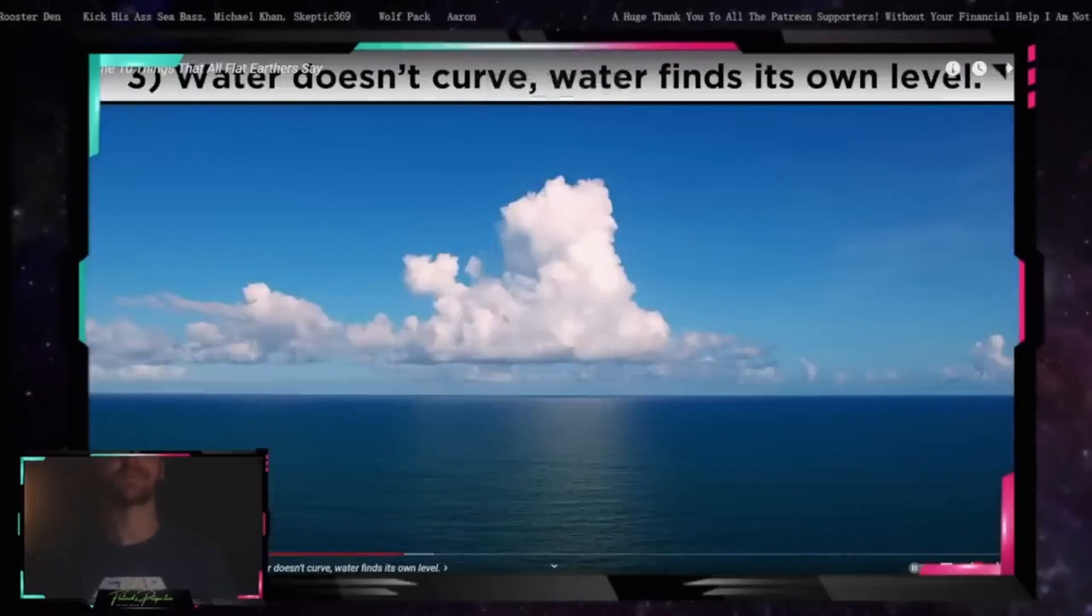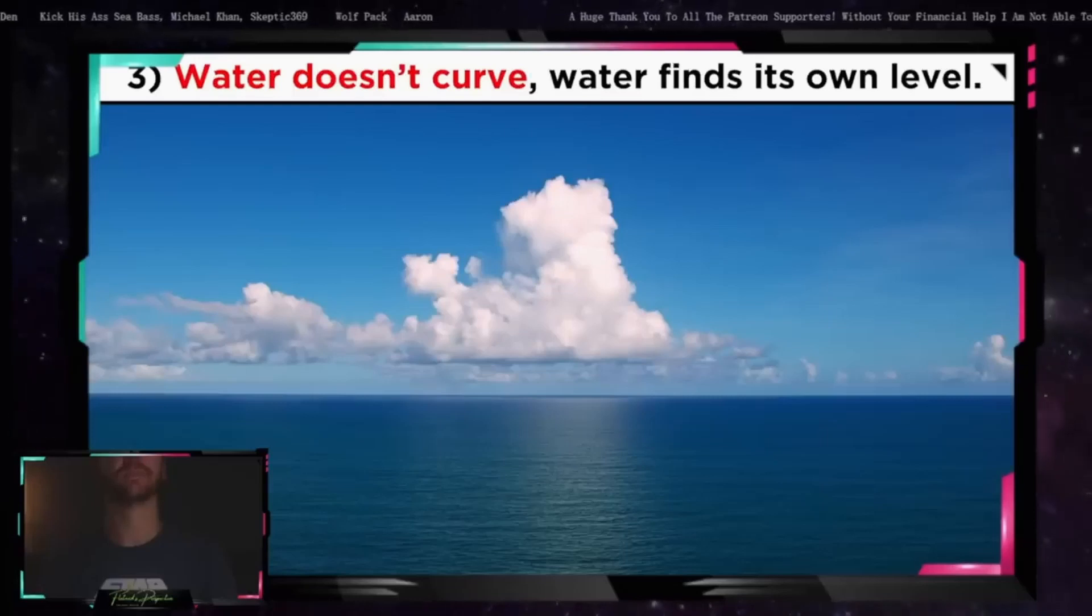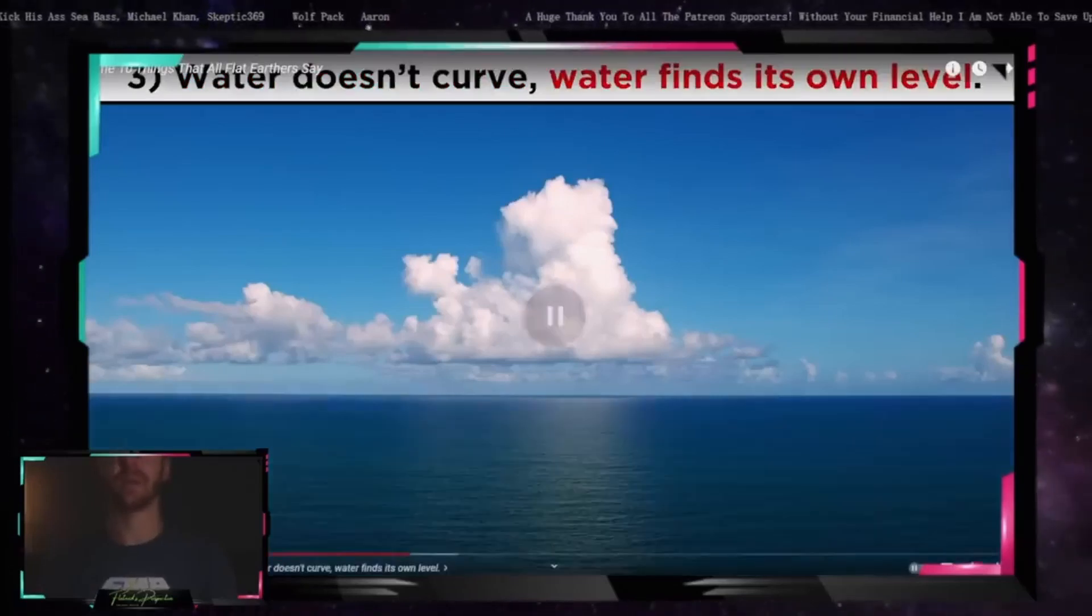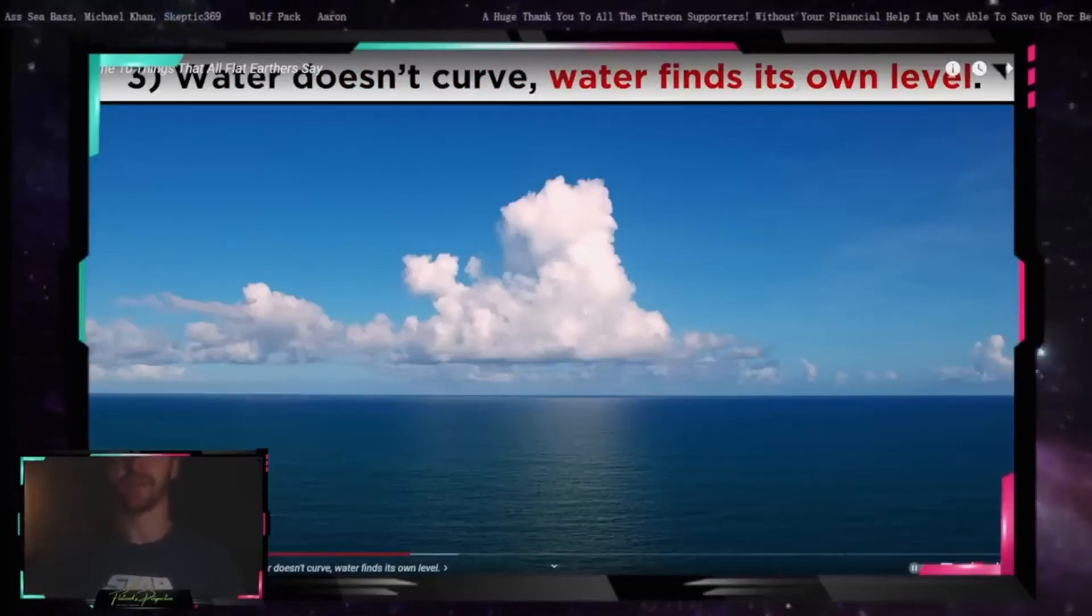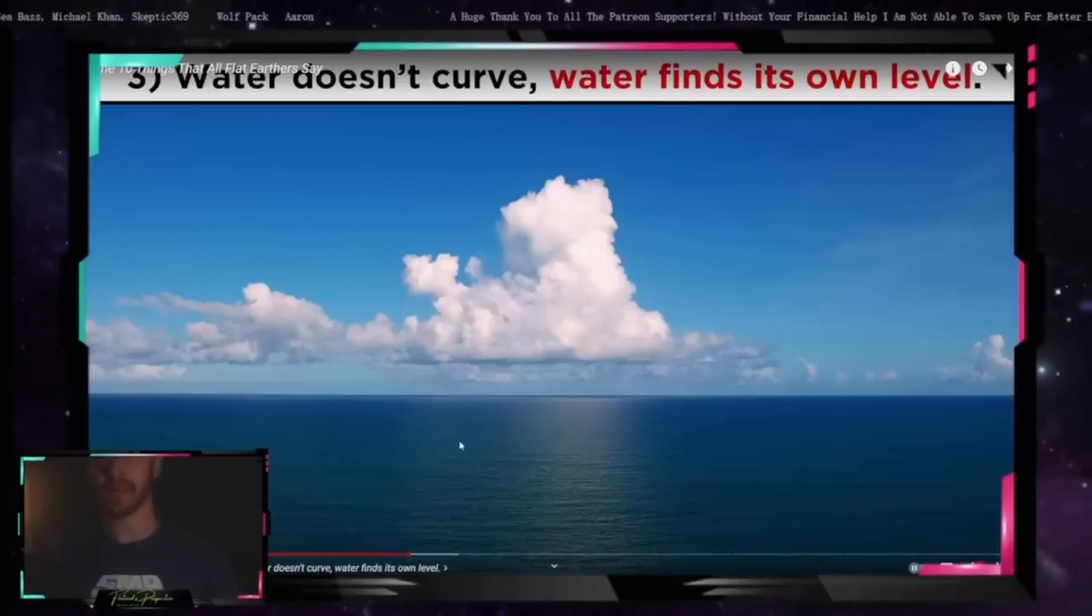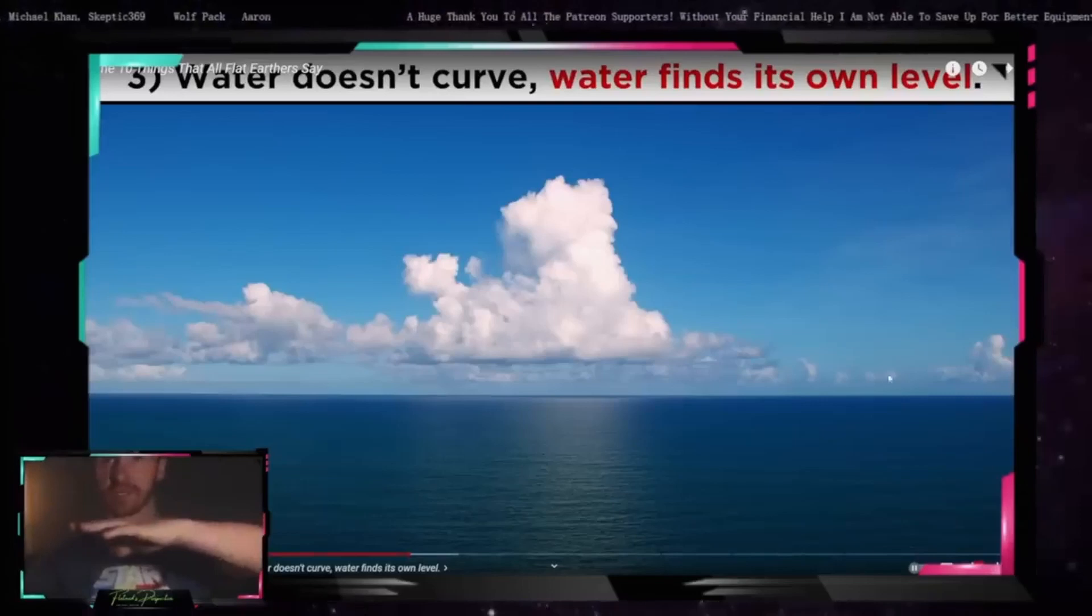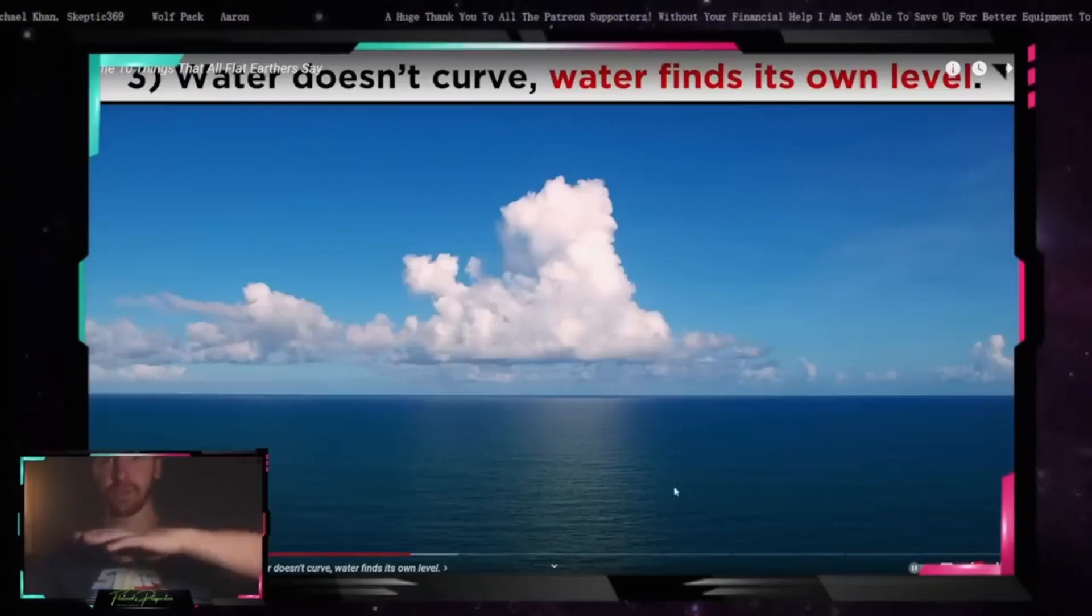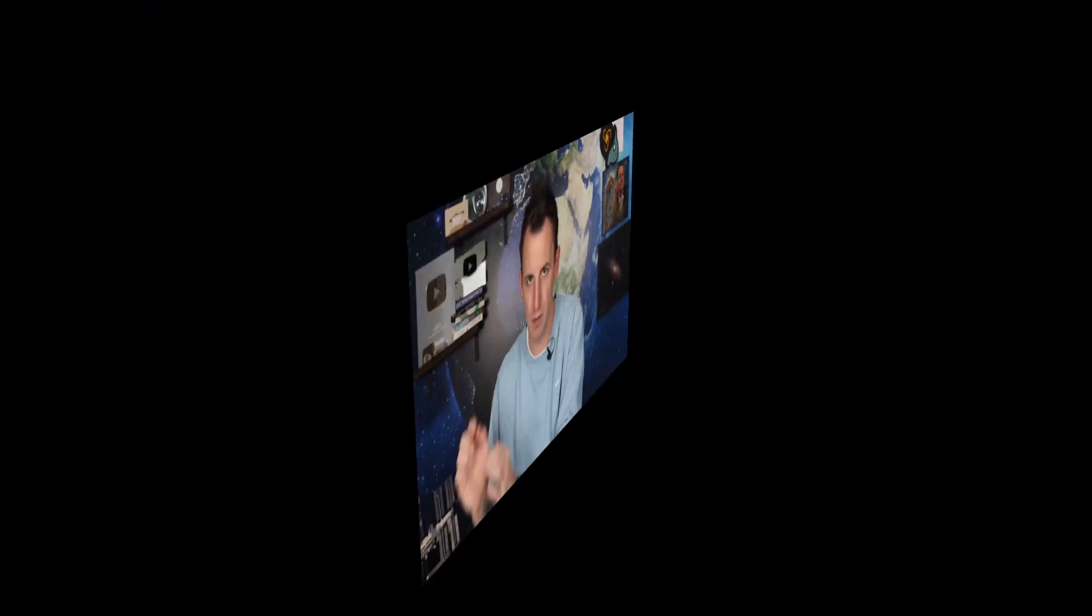All flat earthers say the same two things about water. The first is water doesn't curve. And the second is water finds its own level. Water at rest is level. So water finds its own level is true. Just like when you go to a lake and it's at rest, it's level. Look at that. Is that curving to you? No, water does not curve. It's level.